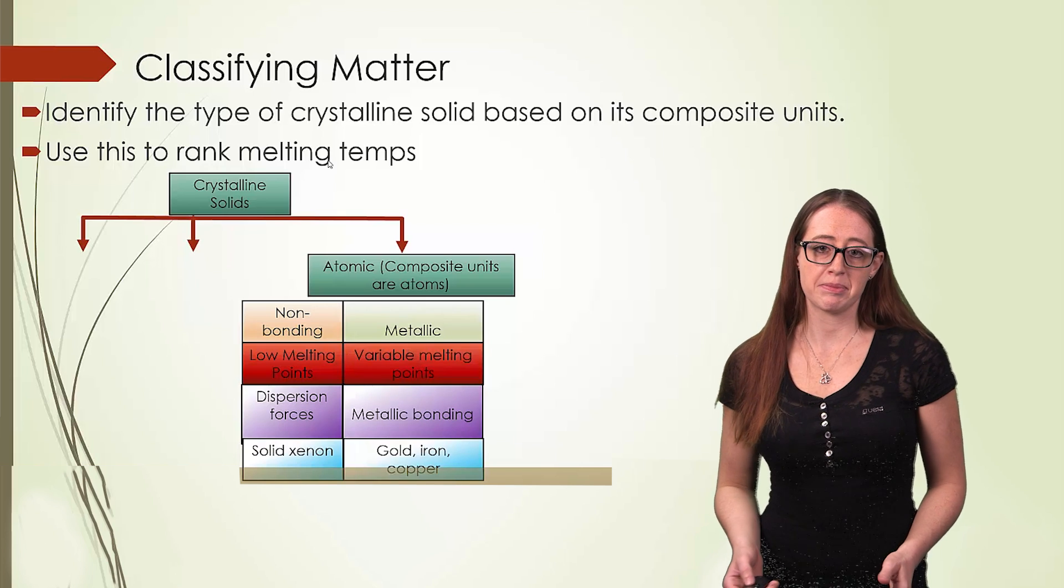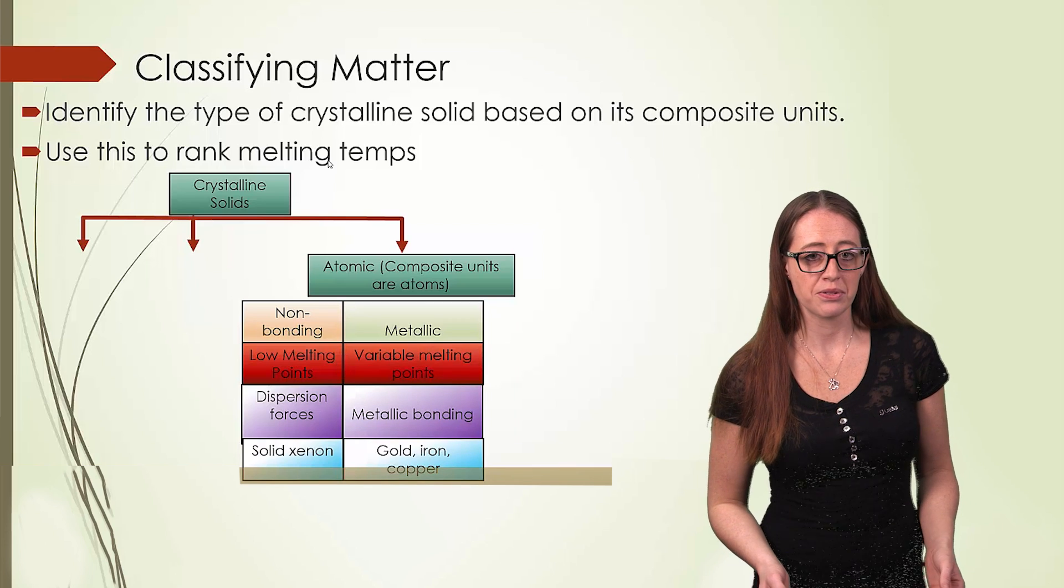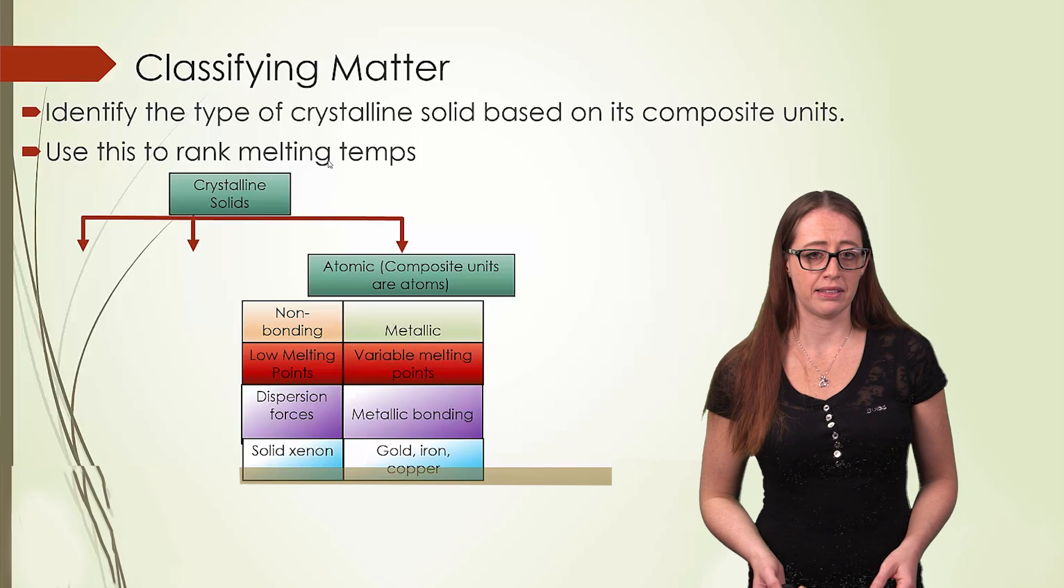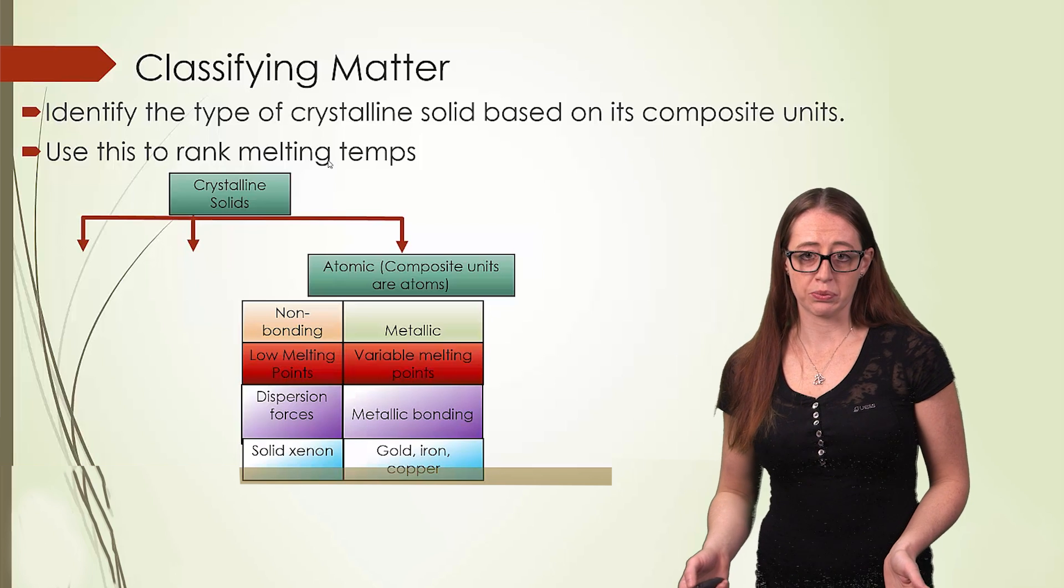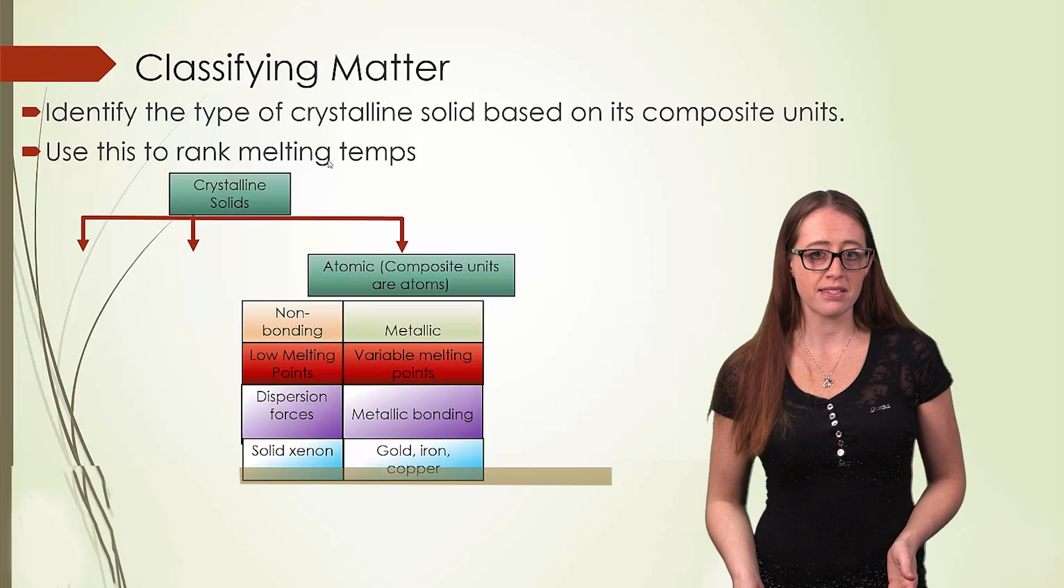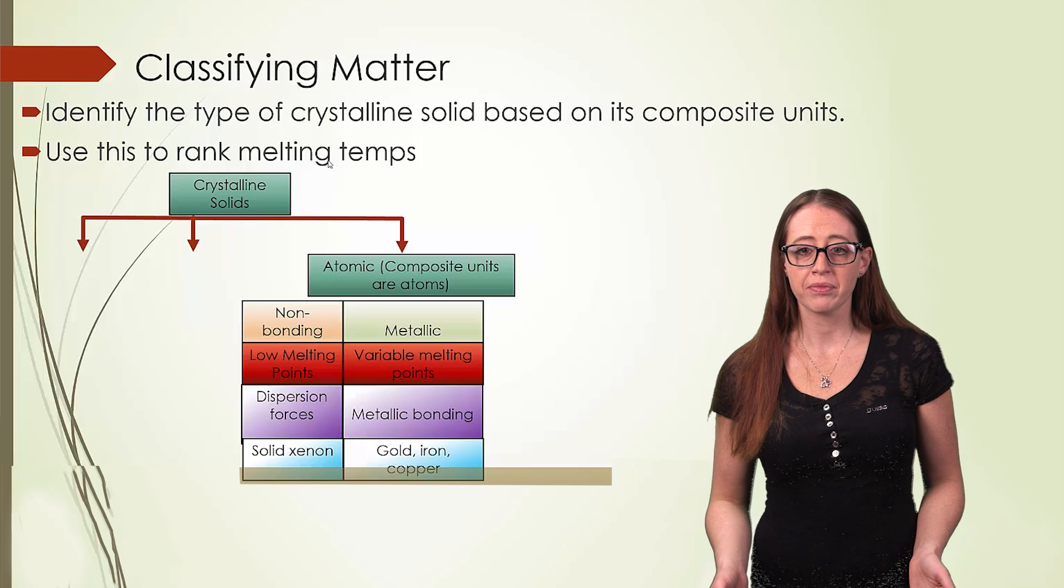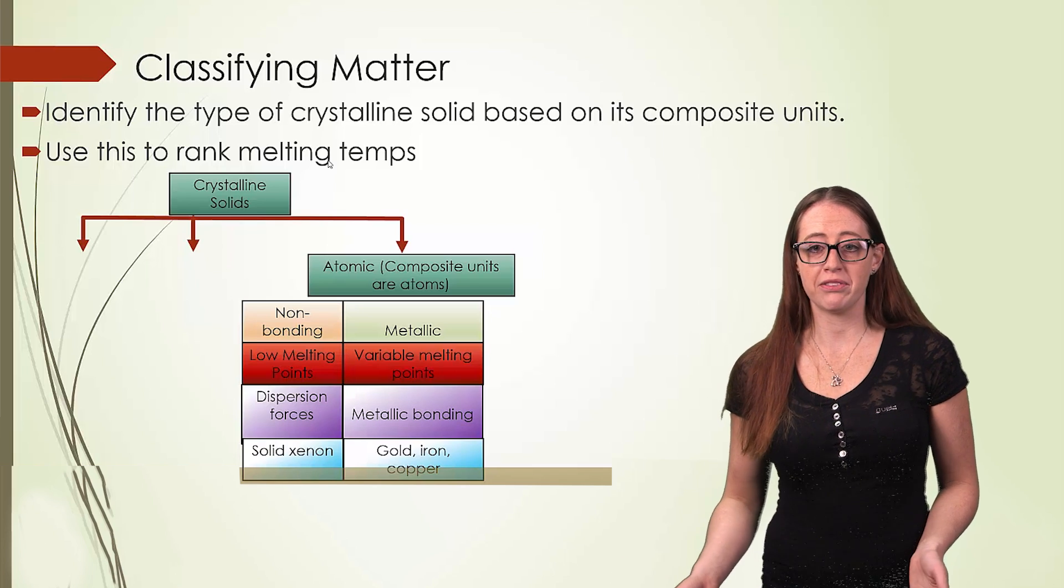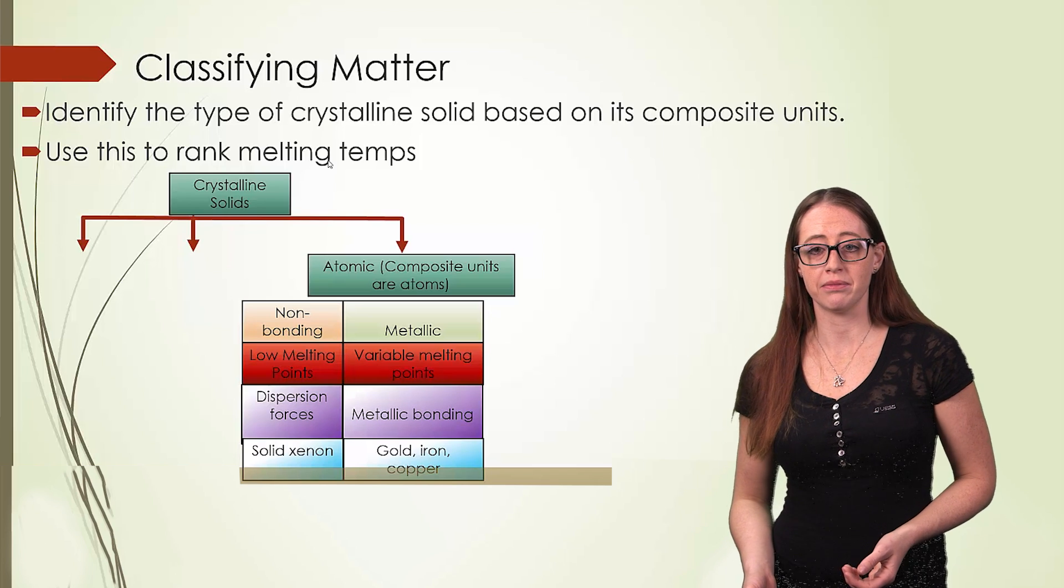The next type is metallic bonds. These form a sea of electron clouds, and you learned about this a bit in 1A. Because of the large range of types of metallic bonds, these can have either a very high or a low melting temperature. And you might be thinking of many of the metals that you know that are quite hard to melt, but there's also metals that you can hold in your hand and melt.